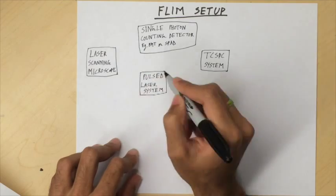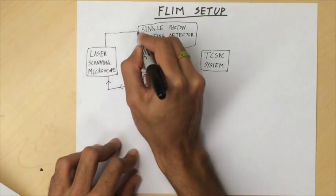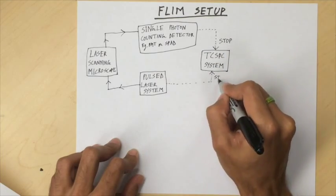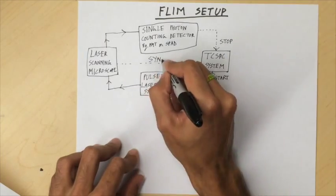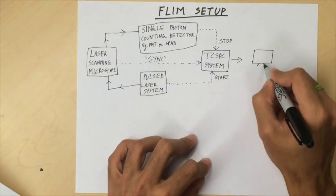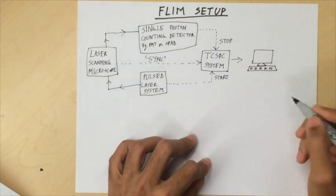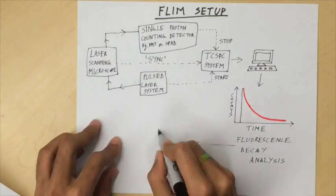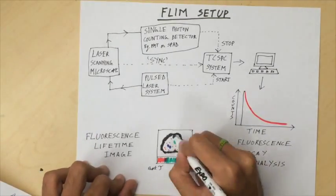The laser system provides the TCSPC with a start signal and the detector with a stop signal the moment a fluorescence photon is detected after excitation. The TCSPC then compiles the data and sends it to the computer which analyzes and presents the decay analysis and a nice false-colored fluorescence lifetime image.